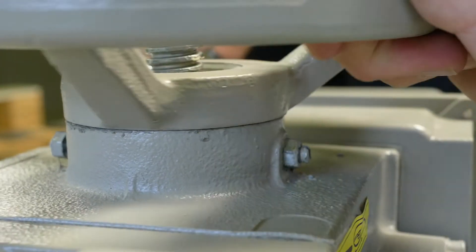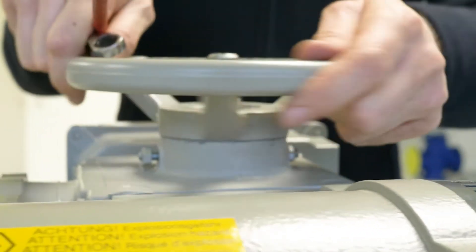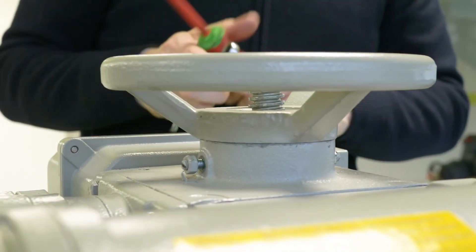After this, check if the hand wheel is going easy. Okay, if not you have to loosen the worm screw a little bit more.